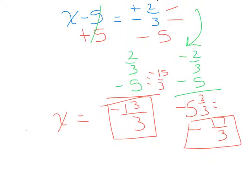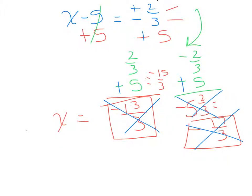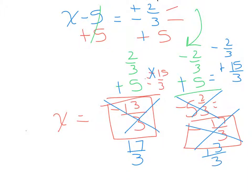I just realized I made a huge mistake — I hope you saw it. This was supposed to be plus 5, and I accidentally wrote minus 5. So we change that to plus 5, making both cases positive 5. The previous solutions were not correct, so let's redo this. With +15/3 added to +2/3, we get +17/3. And with +15/3 added to −2/3, we get +13/3. So the corrected solutions are 17/3 and 13/3. We all make mistakes — just go back and correct your signs.